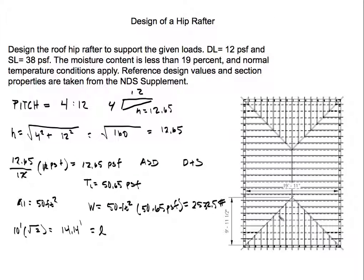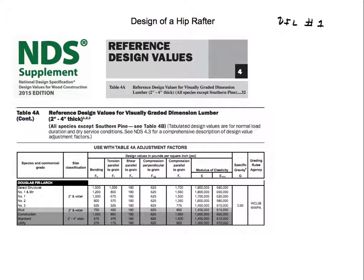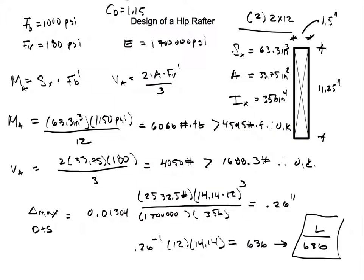The double 2×12 Douglas Fir-Larch No. 1 passes for moment, shear, and deflection — the hip rafter design is complete. From here you would also design the post connections, post-downs, and transfer all loading to the foundation. Thanks for watching; please like and subscribe if you found this helpful. Have a great day!